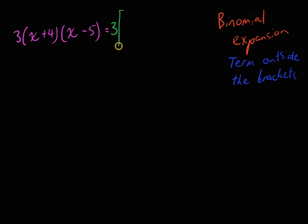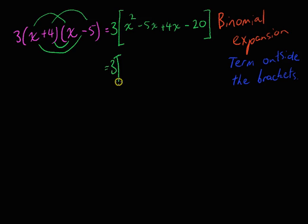So the 3 stays out here, and then I do my FOIL expansion. First, x squared. Outer, negative 5x. Inner, positive 4x. Last, positive 4 times negative 5 is negative 20. Keep the 3 on the outside, simplify. x squared minus 5x plus 4x, that's just negative x, negative 20.